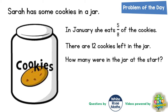Welcome problem solving fans to another problem of the day — this one is all about cookies in a jar. Sarah's got some cookies in a jar; in January she eats 5 eighths of the cookies. Now it doesn't say this, but if she's eating 5 eighths, that must mean that there is 3 eighths left. That could be crucial later on — sometimes you've got to think about the things it doesn't say as well.